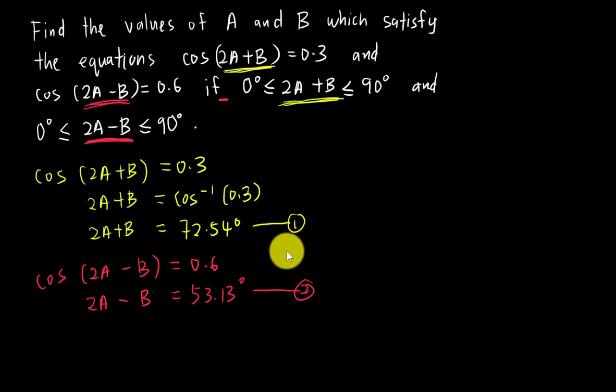I can actually do the elimination method. What I want to do is make 2A minus 2A, so I'll use the first equation minus my second equation. If I use the first equation minus the second equation, 2A minus 2A gives me zero, and B minus negative B gives me 2B.